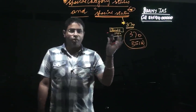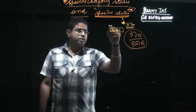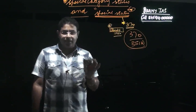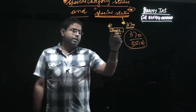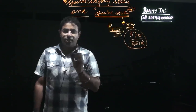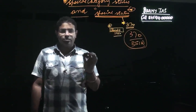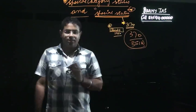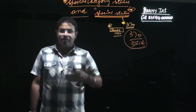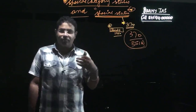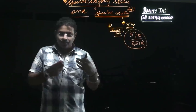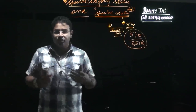Article 370 was added as a temporary article in the Indian Constitution to accord a special status to the state of Jammu and Kashmir. As per this article, there were four subjects that the Union government of India kept with itself, and the rest of the subjects were transferred to the state of Jammu and Kashmir.